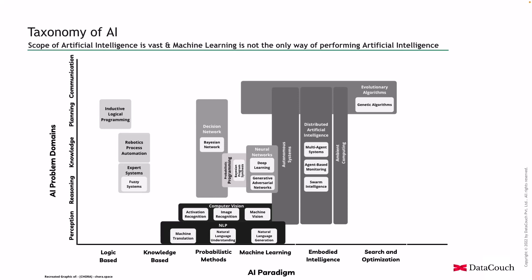Now let's look at what these boxes mean. Starting with Robotic Process Automation — this area of AI uses a list of rules and actions performed by watching what users do when completing a certain task, and then replicating that through machines. It is AI specifically focused on automating business processes.